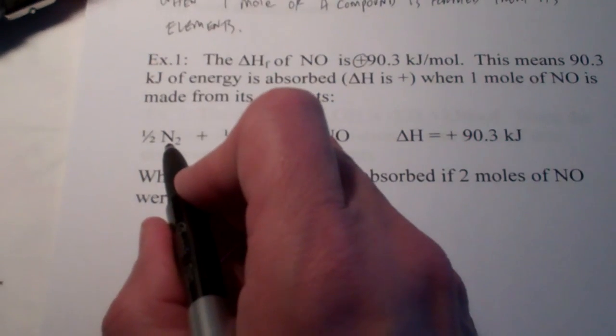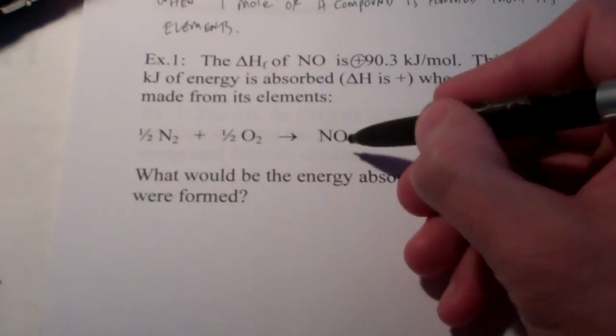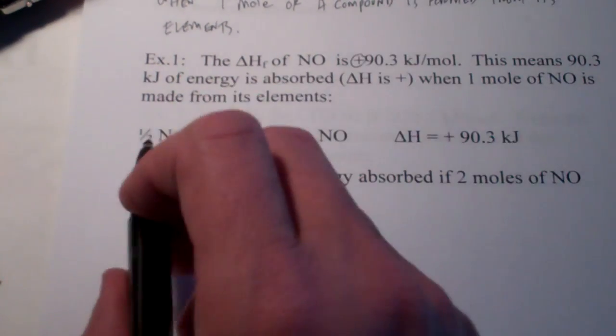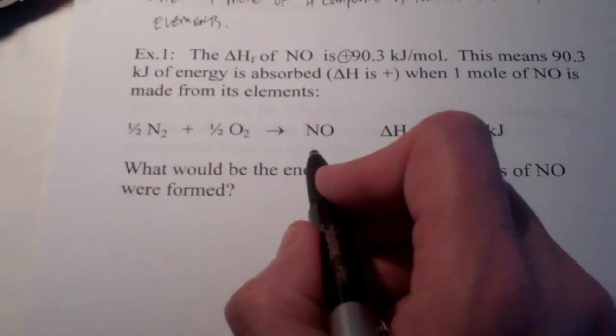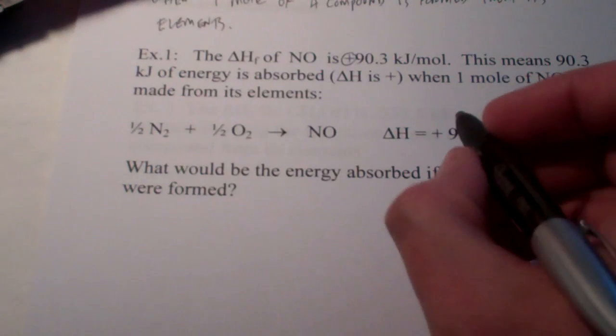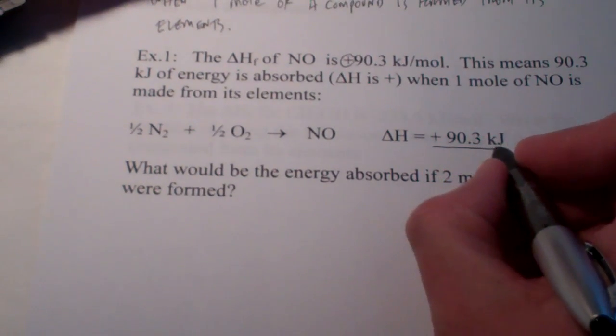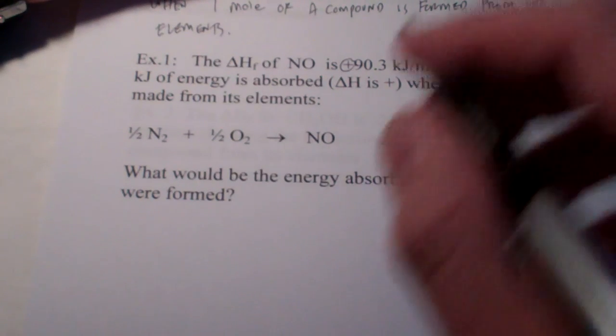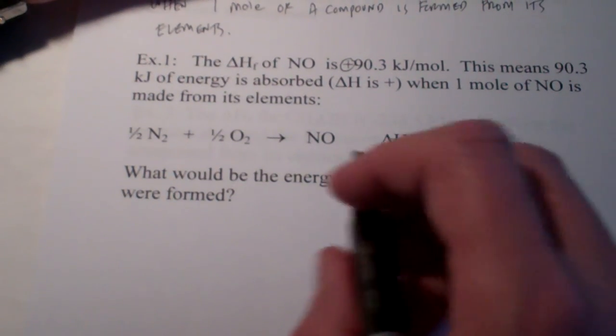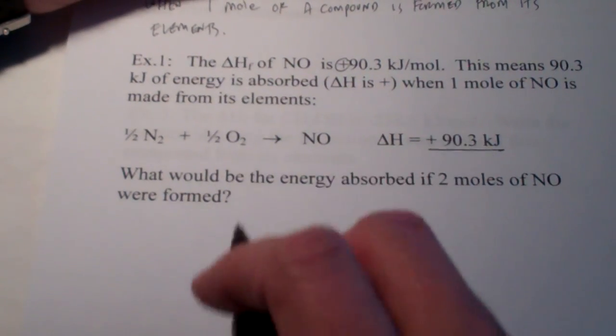Those elements come in pairs in their elemental state. So, it's N2 plus O2. And, to make one mole of this compound, I need half of a mole of N2 and half of a mole of O2. And, I will make one mole of NO. So, the heat required for that, how do I know it's required? Well, delta H is positive, is 90.3 kilojoules per mole of NO formed.